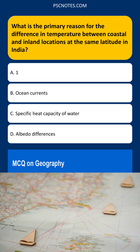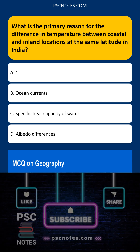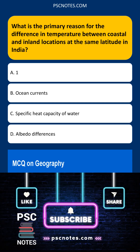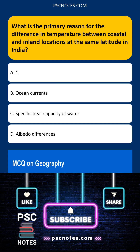Albedo, which is the reflectivity of a surface, plays a role in temperature variations, but it's not the primary driver of the temperature difference between coastal and inland locations. Differences in albedo between land cover types — for example, forests versus deserts — contribute to localized temperature variations, but the effect is less significant than water's capacity to store and release heat.